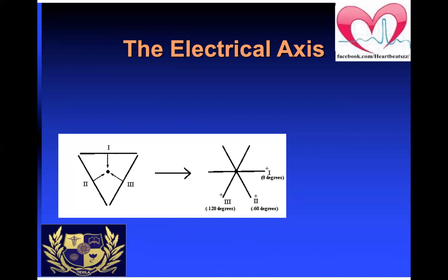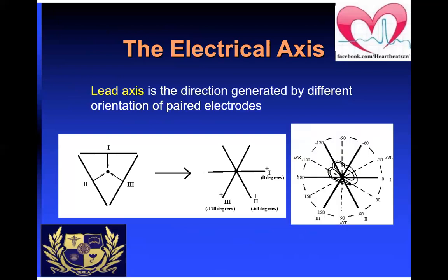About its axis: there is 0 degrees, 60 degrees, 120, then 180. On the other side are the negatives — minus 60, minus 120. The lead axis is the direction generated by the different orientation of the paired electrodes. The middle between 120 and 180 will be 150; between 60 and 120 will be 90 degrees, pointing towards the augmented limb leads — AVL for the left side, AVF for the foot, and AVR for the right side.